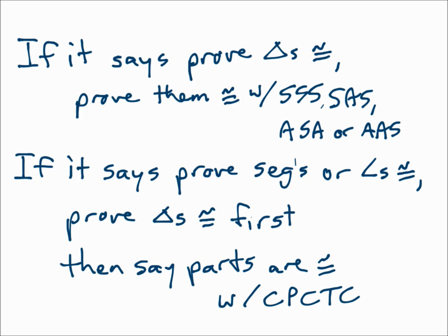Keep in mind that if the proof says to prove triangles congruent, then prove them congruent, and your final answer will be whether you're using SSS, SAS, ASA, or AAS. However, if it says to prove segments congruent or angles congruent, prove the triangles congruent first, and then say that those parts are congruent because of CPCTC — corresponding parts of congruent triangles are congruent. Always pay attention to your goal: do you need to show the triangles are congruent, or do you need to take it one step further and say that the corresponding parts are congruent?